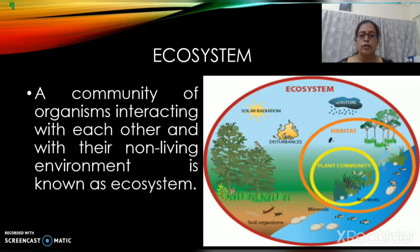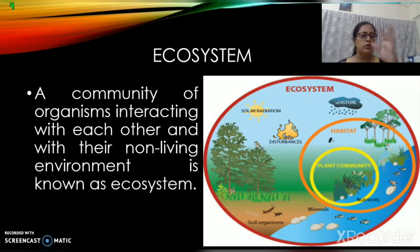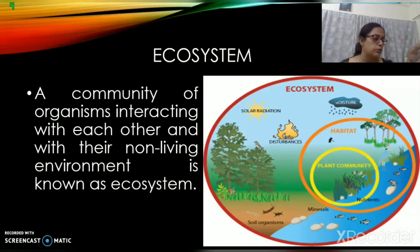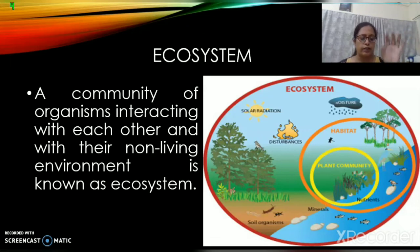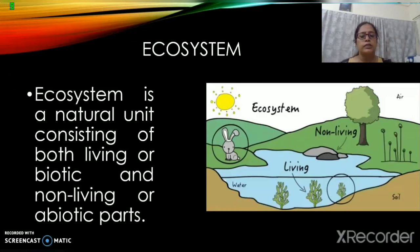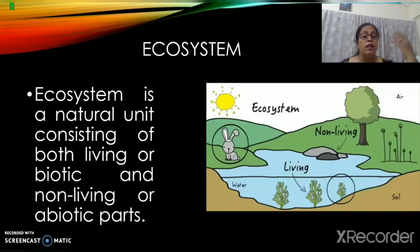Now let us know more about the ecosystem. It is a community of organisms interacting with each other and with their non-living environment. It includes all things, whether living or non-living. From this picture, the ecosystem has moisture, solar radiation, disturbances, soil organisms, minerals, nutrients, plant community and different habitats. This is how the ecosystem is formed. You will find ecosystem is a natural unit consisting of both living or biotic and non-living or abiotic parts. In this picture, you can see air, soil, water, plants are living, and rocks are non-living. So this is what the ecosystem is.